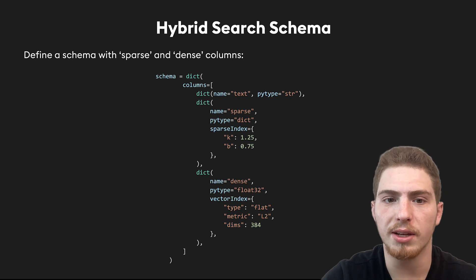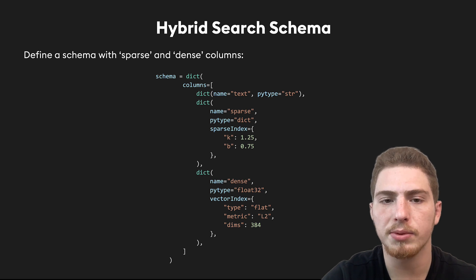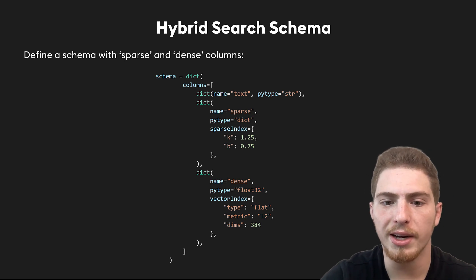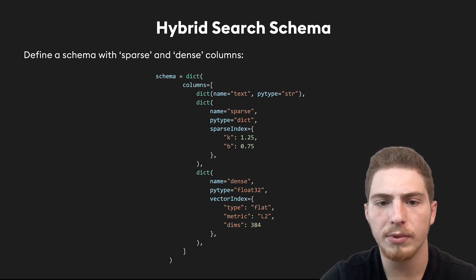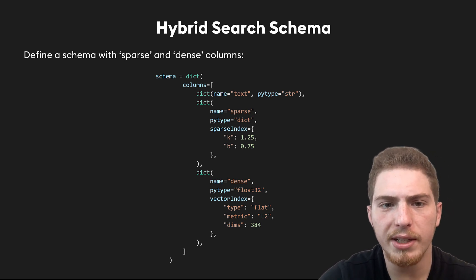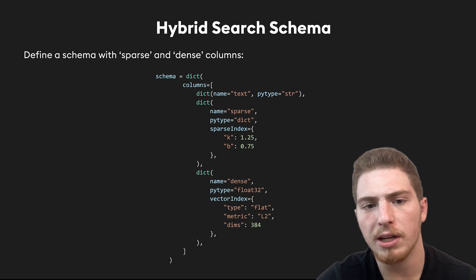Our hybrid search schema looks like this. We have our text that we're inserting, and then we have our sparse and dense columns. Our dense columns are super simple — it's just the vector index, which has our index type or similarity metric and our number of dimensions for the vectors we'll be inserting. Our sparse column has an additional parameter called sparse index, which has the K and B hyperparameters. The idea with hybrid search is you'll be inserting your dense vectors and your sparse vectors for every new data point that you insert.